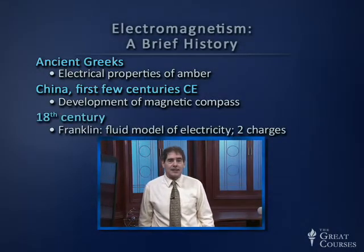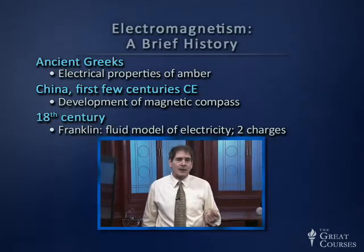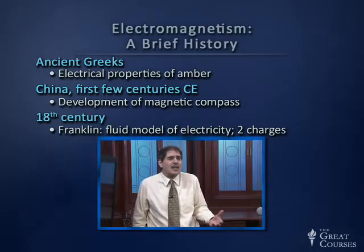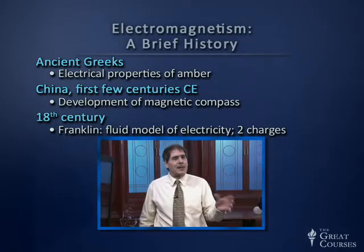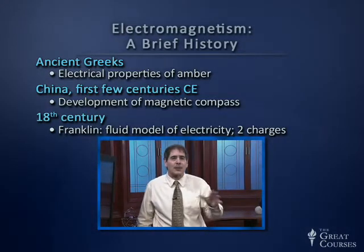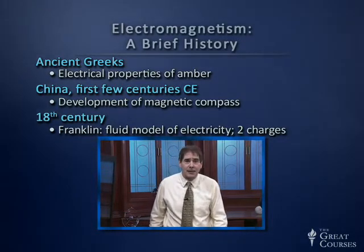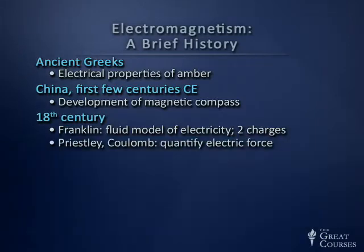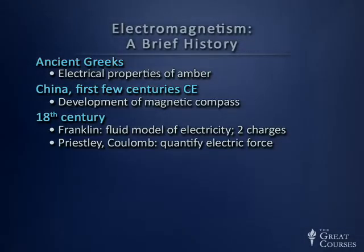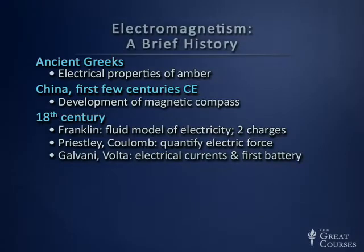So electricity, magnetism, and humankind's understanding of them go back thousands of years. In the 18th century, Benjamin Franklin put forward a model of electricity, envisioning it as a kind of fluid. He was the first to realize there were probably two aspects — two kinds of charge, as we'd call them today. Joseph Priestley, better known for the discovery of oxygen, and Charles Coulomb in France both quantified the electric force — they wrote an equation describing how the electric force between two charges behaved.